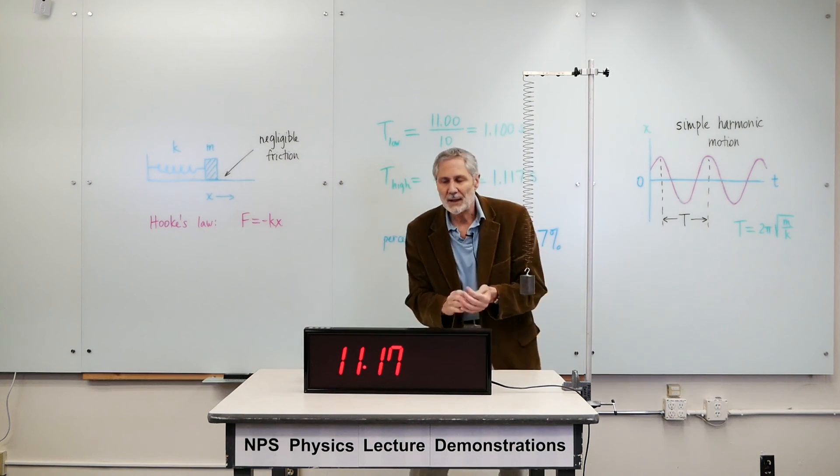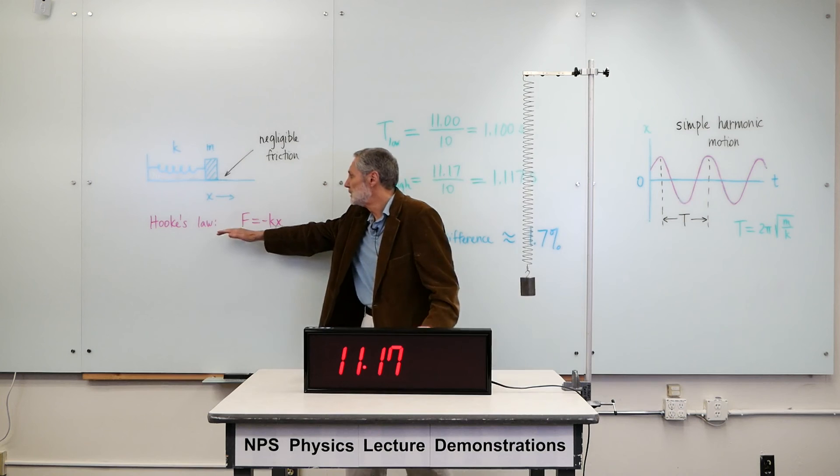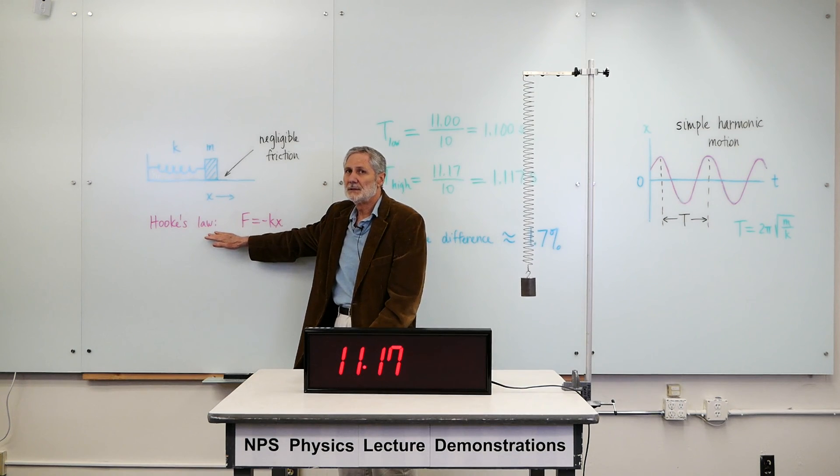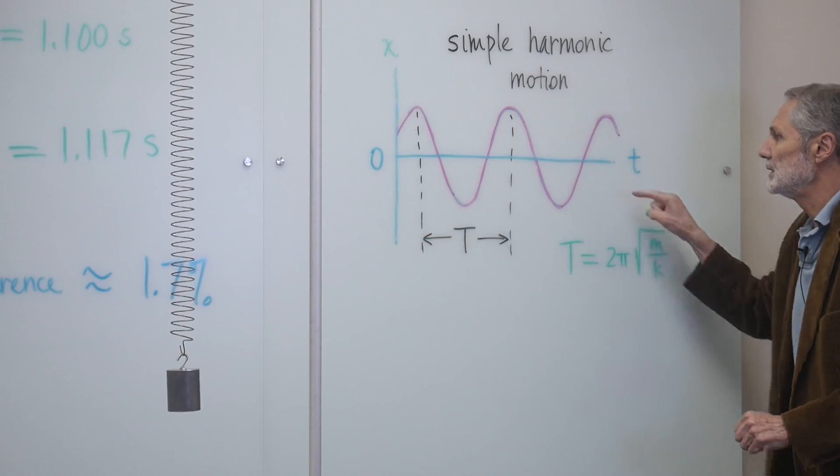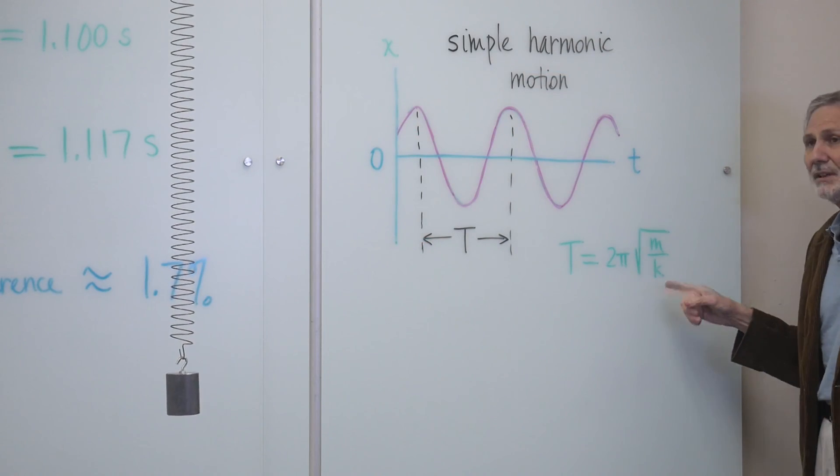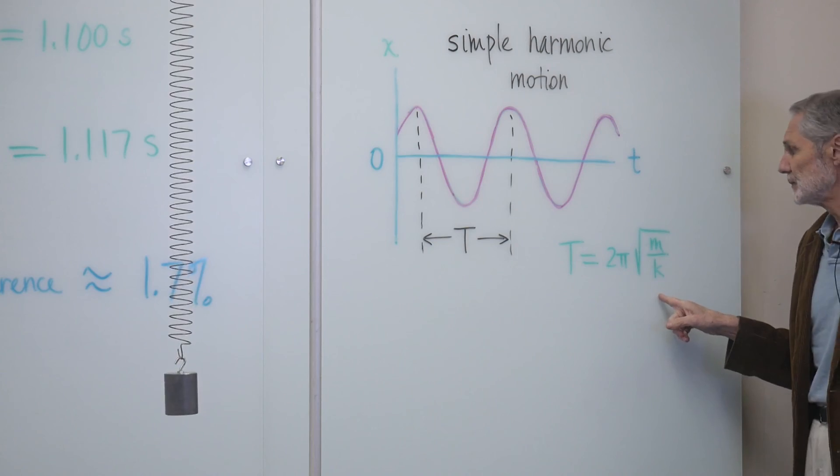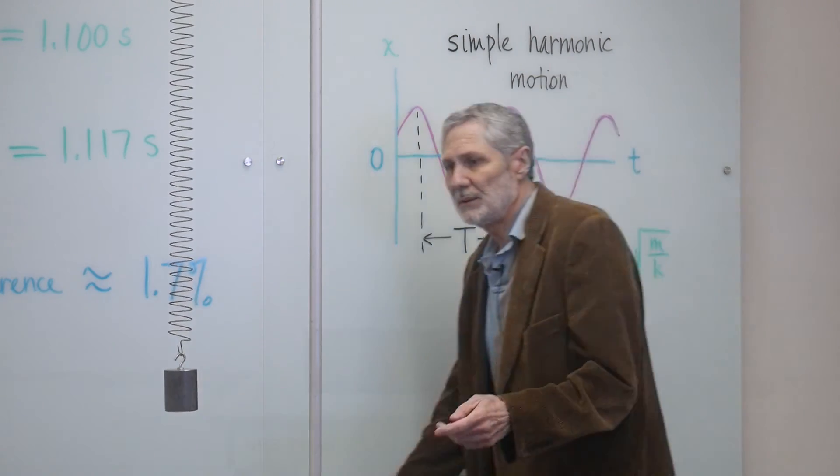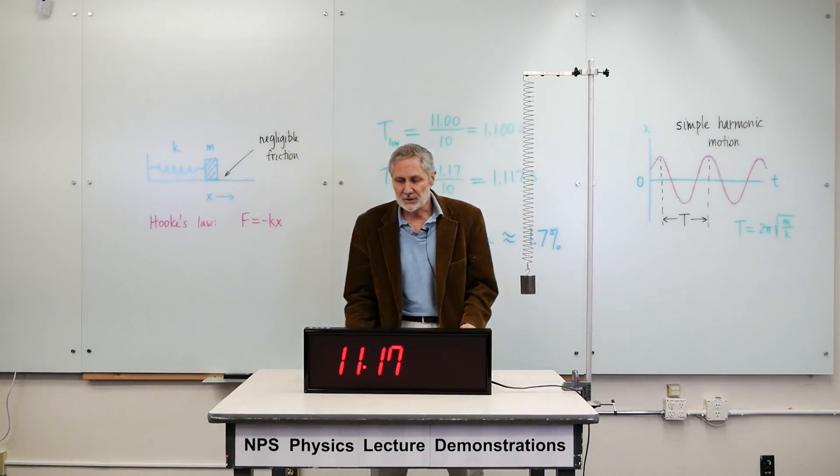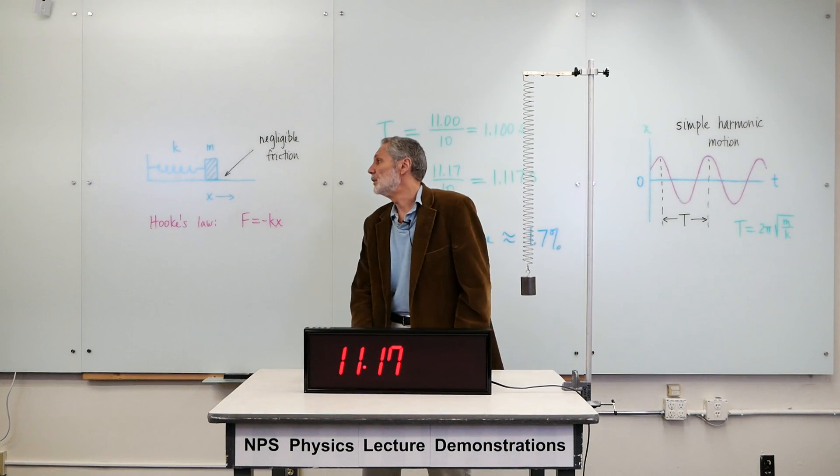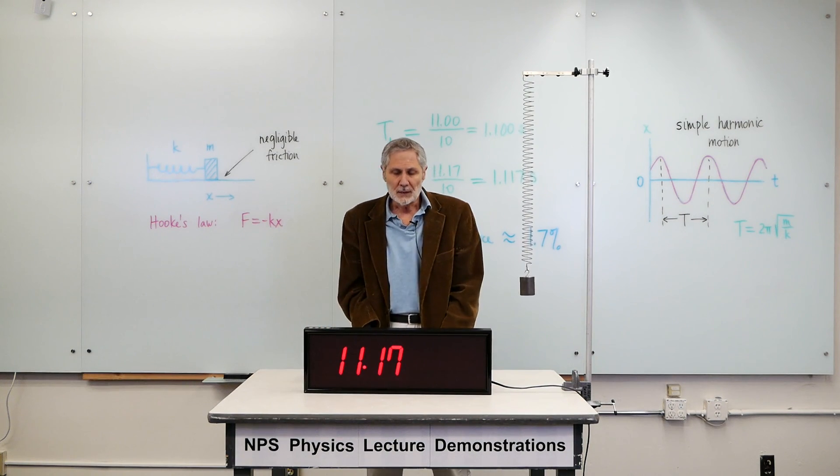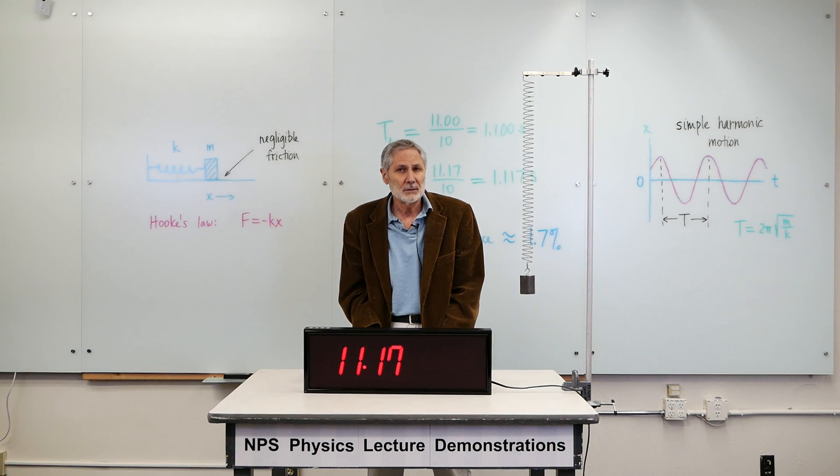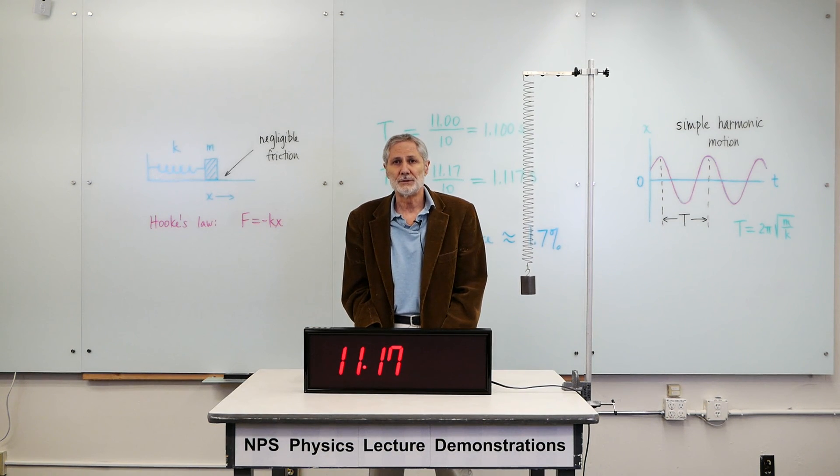So to conclude here, when we have Hooke's Law for an oscillator, the motion is simple harmonic. It varies sinusoidally in time. The period is independent of the amplitude. It's given by this expression. It's independent of the amplitude. And this holds for all oscillators where Hooke's Law is valid. And one of the reasons this is important is that a similar situation occurs for waves. Thank you very much for watching.